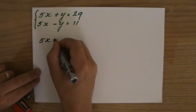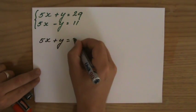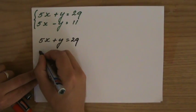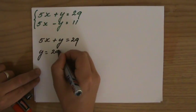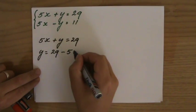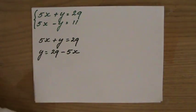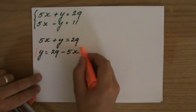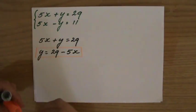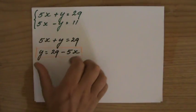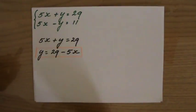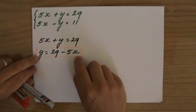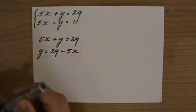5x plus y equals 29. I'm going to make y the subject so that's going to be 29 minus 5x. I hope you understand now why it's 29 minus 5x. I'm just going to put a little box around that before I'm not finished. But I have to substitute that now. That's why I call it the substitution method.